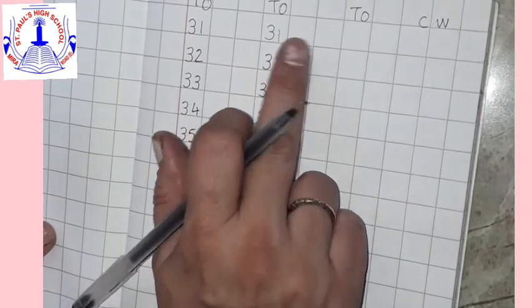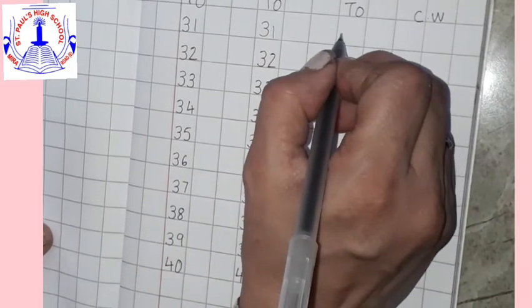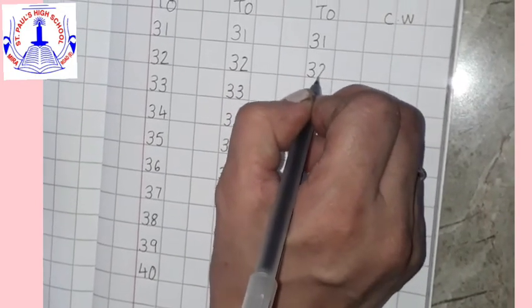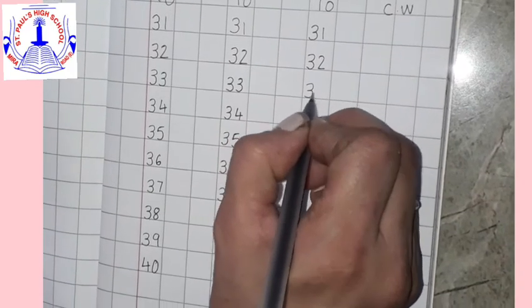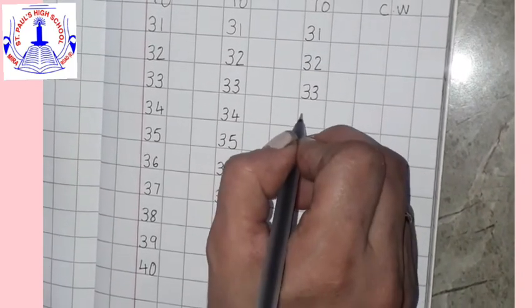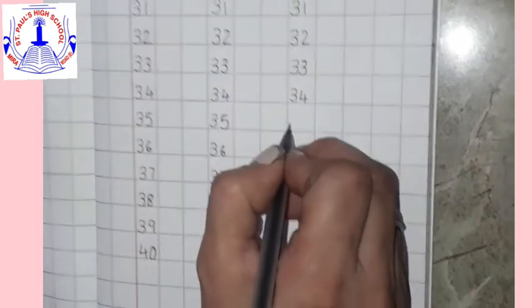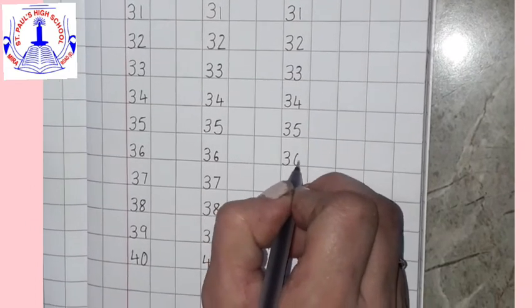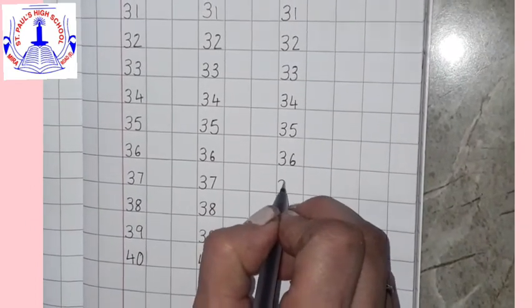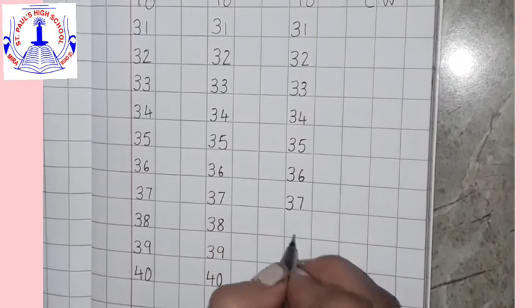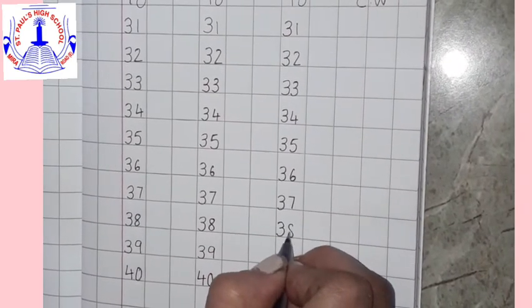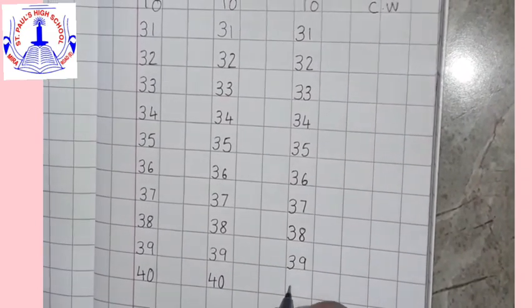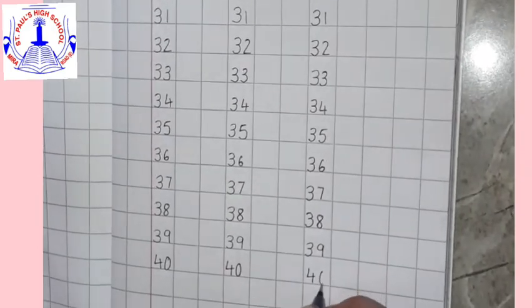Now again, after leaving two lines, start writing. 31, 32, 33, 34, 35, 36, 37, 38, 39, 40.